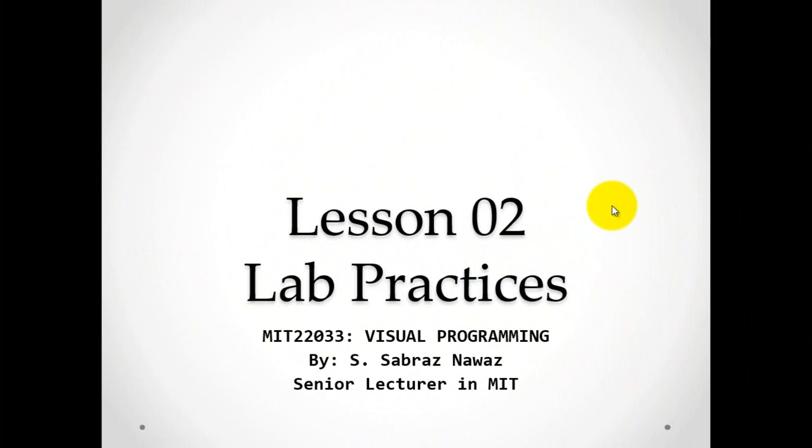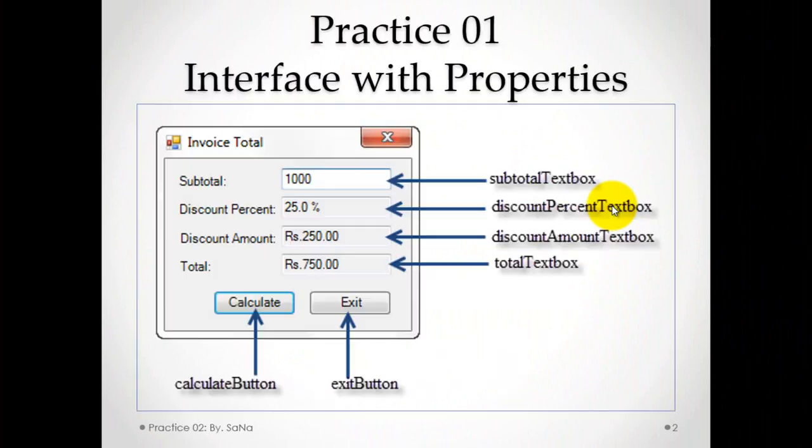Hello students, welcome to MIT 22033 Visual Programming Lesson 2, Lab Practices. Practice one is an invoice total application where we have an application that takes the subtotal of an amount or purchase, lets the user enter the percentage discount, and then calculates the discount amount and net total that is payable.